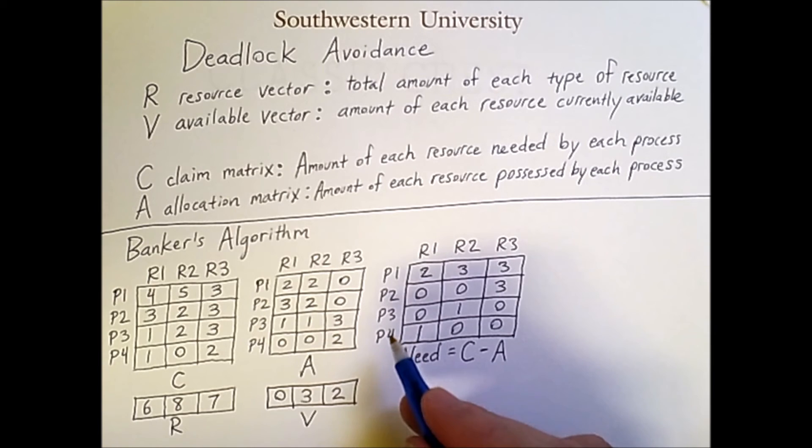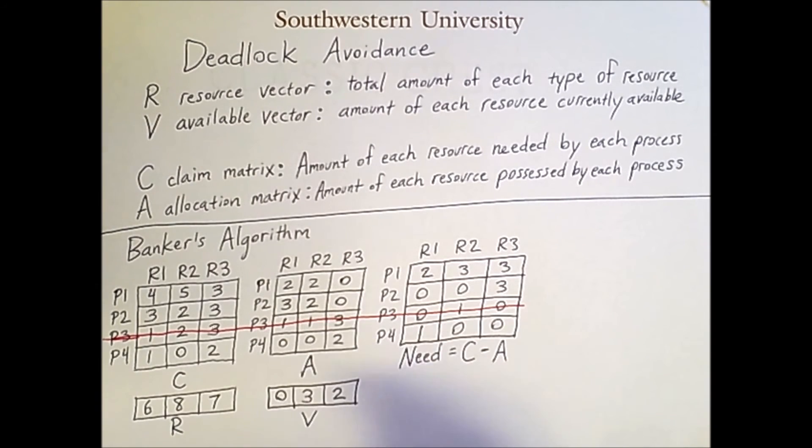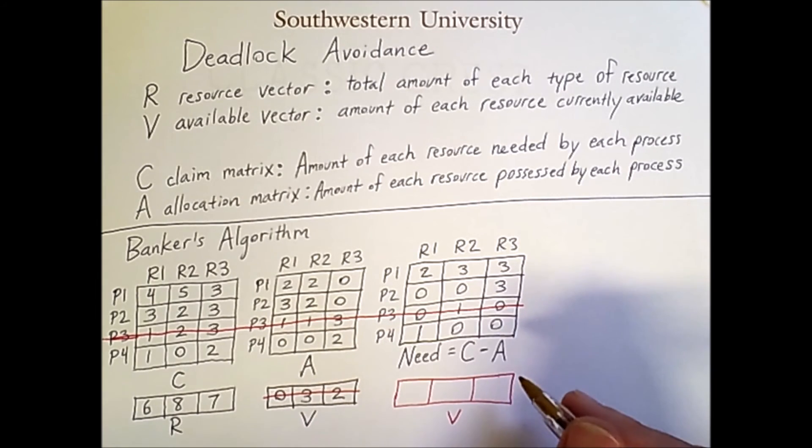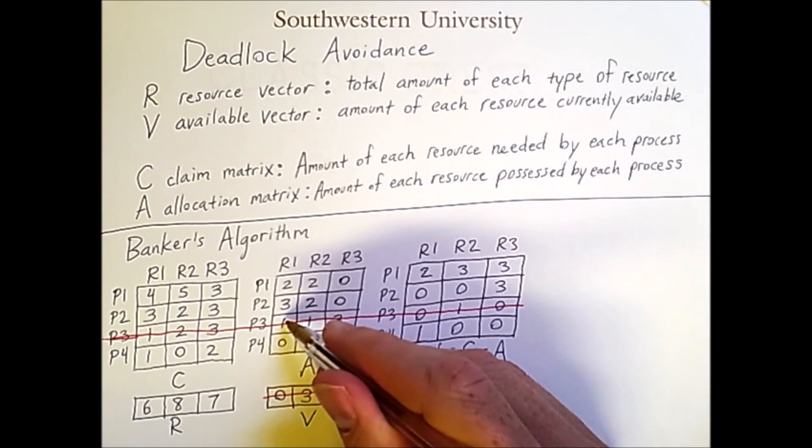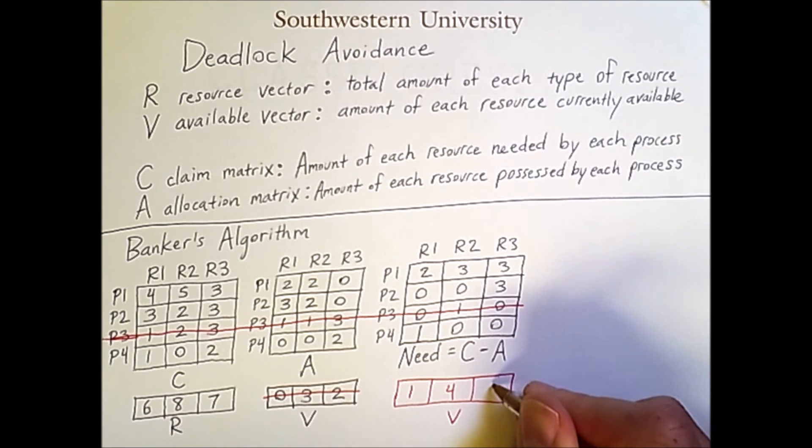So if we run process 3 to completion, then it will be eliminated from our calculations. And importantly, all of its allocated resources will be returned to the system here. So the new available vector would be 0 plus 1 is 1, 3 plus 1 is 4, and 2 plus 3 is 5.